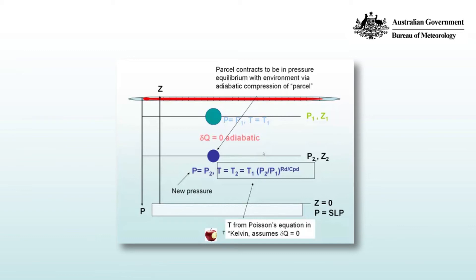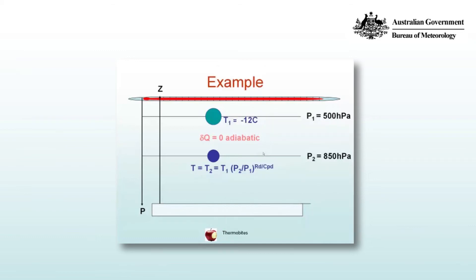So, let's do a calculation. Consider a parcel at pressure p1 of 500 hectopascals and it's going to descend dry adiabatically to a pressure of 850 hectopascals. It starts with a temperature of minus 12 degrees Celsius. What will its final temperature be? Pause the video and do the calculation. The new temperature t2 is equal to the old temperature t1 which is 261.15 degrees Kelvin multiplied by the ratio 850 on 500 to the 0.286, and that gives us 303.9 degrees Kelvin or 30.8 degrees Celsius.